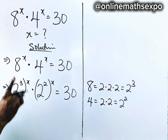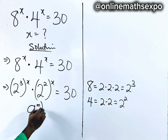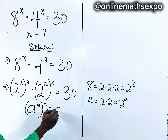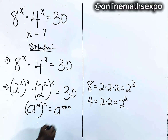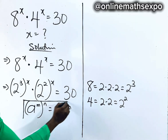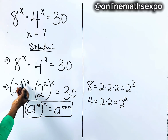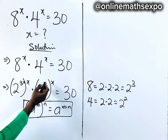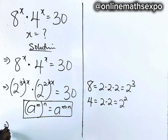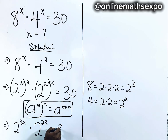Now, what do you do next? Remember: for every 8 to the power of m raised to power n, it is 8 to the power of m multiplied by n — the powers multiply. So applying it here, these powers multiply out, and we're going to have 2 to the power of 3x multiplied by 2 to the power of 2x is equal to 30.